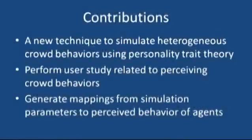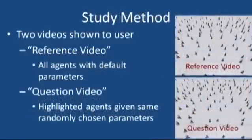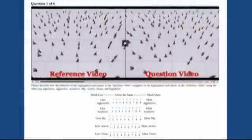We present a framework for simulating personality traits of agents in heterogeneous crowd simulations. We ran a user study where participants were asked to rate what personality they saw in agents with randomly chosen simulation parameters. Using this data, we computed a mapping of these simulation parameters to perceived personalities.